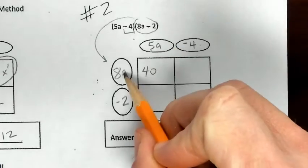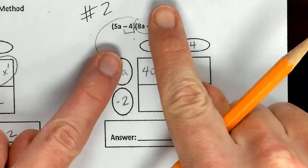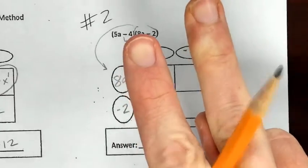And I've got a to the first, a to the first. So you've got one up here, you've got one right here. You add those together, I've got a squared.